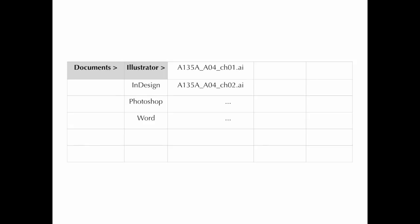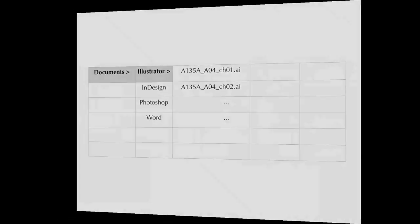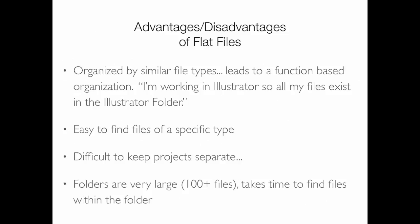Maybe you break it down a little further by file type — so all Illustrator files go in an Illustrator folder, all Word files in a Word folder. That's not a bad strategy; it's easy to find files of a specific type. But it's kind of difficult to keep projects separate. If you write lots of English papers across multiple semesters, how do you know which papers were from which class? It becomes an organizational nightmare with huge folders full of hundreds or thousands of files that you have to scroll through endlessly.